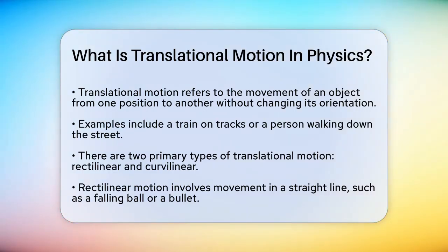Translational motion is when an object moves from one position to another without changing its orientation. Imagine a train moving on its tracks or a person walking down the street. In both cases, the object is shifting from one point to another without rotating.